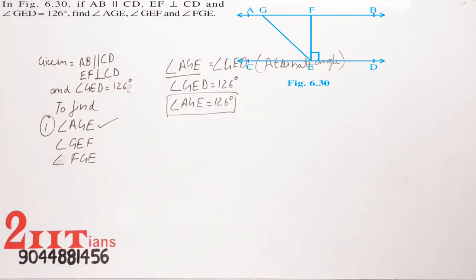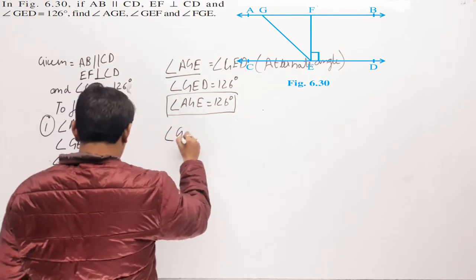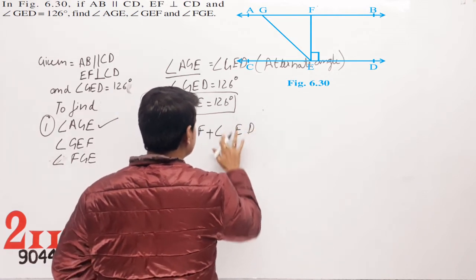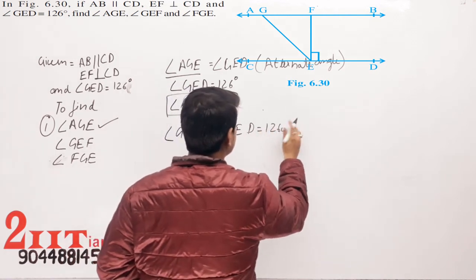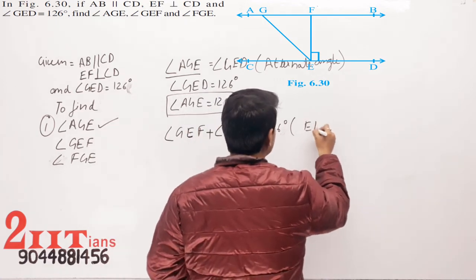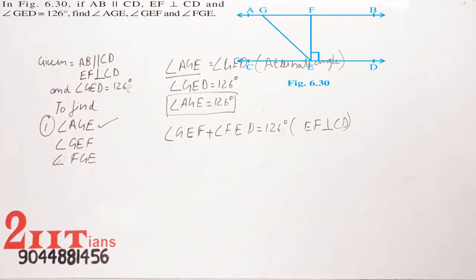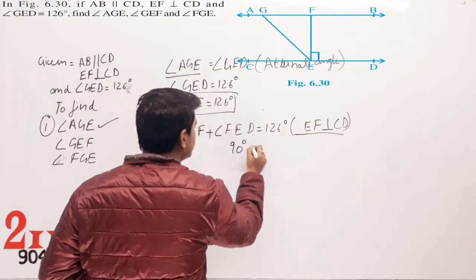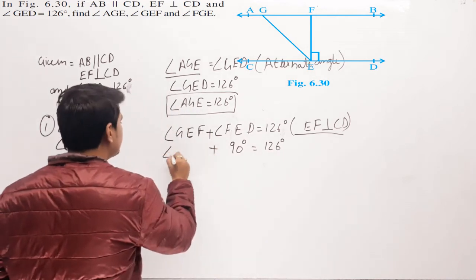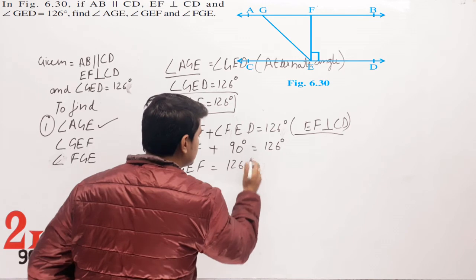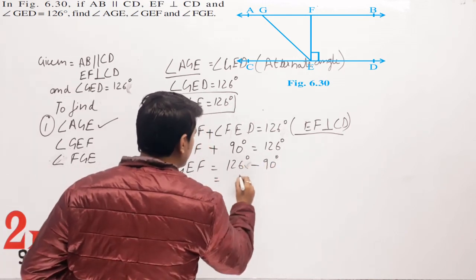Now the second is angle GEF. Angle GEF plus angle FED equals 126 degrees, because line EF is perpendicular to CD. Angle FED is 90 degrees since EF is perpendicular to CD. So angle GEF equals 126 degrees minus 90 degrees, which gives us 36 degrees.